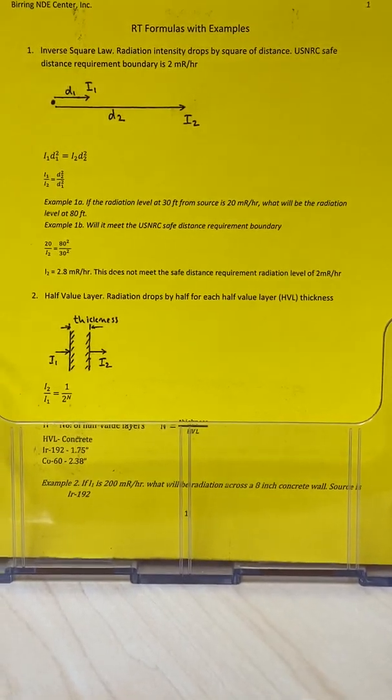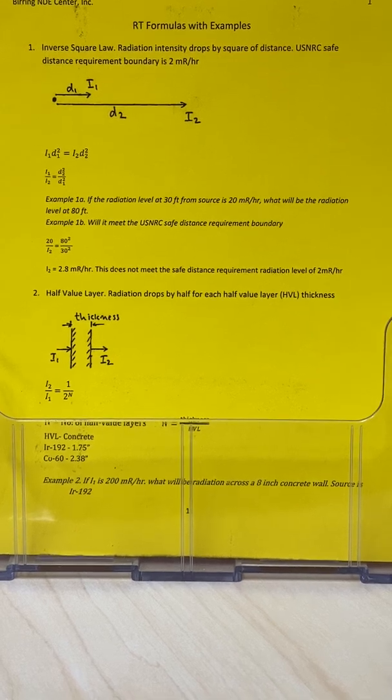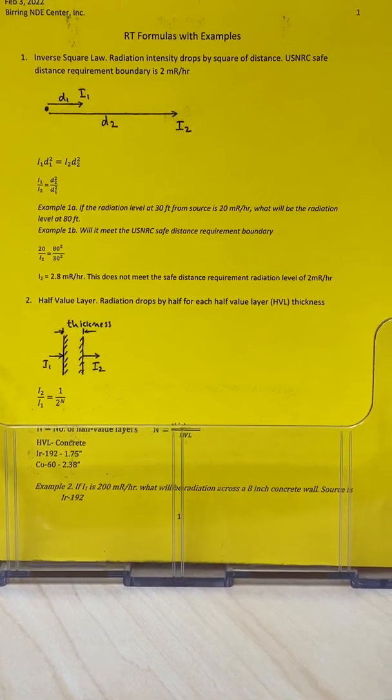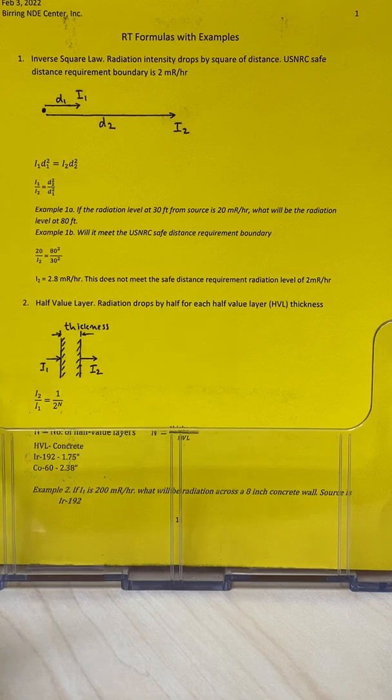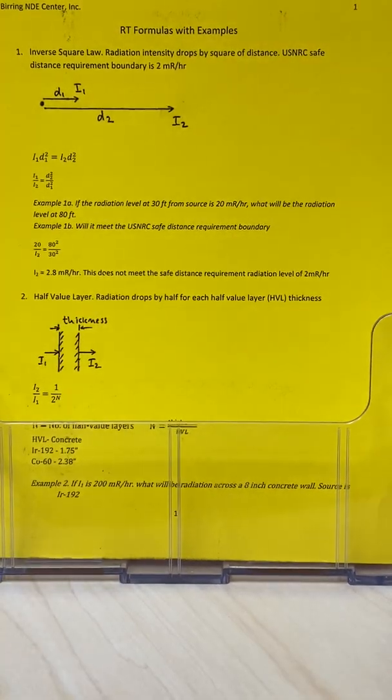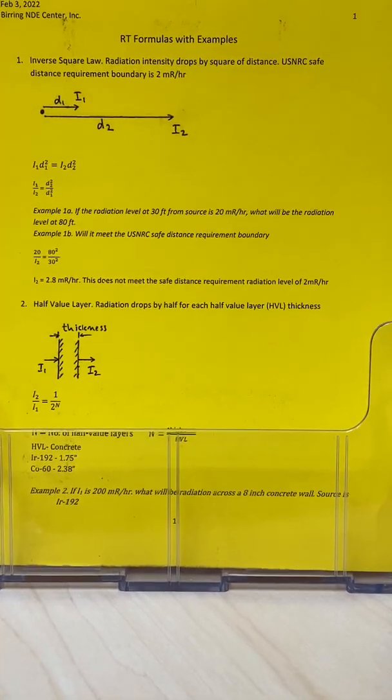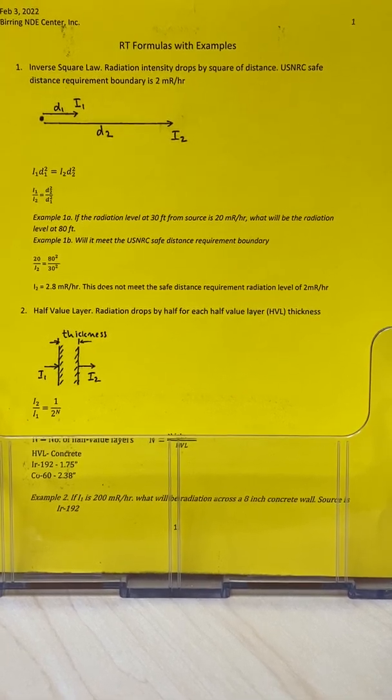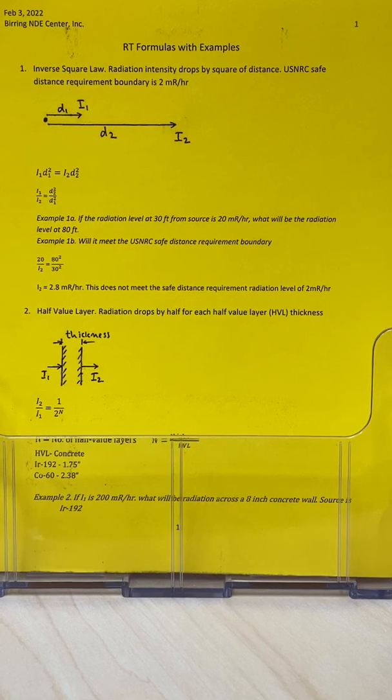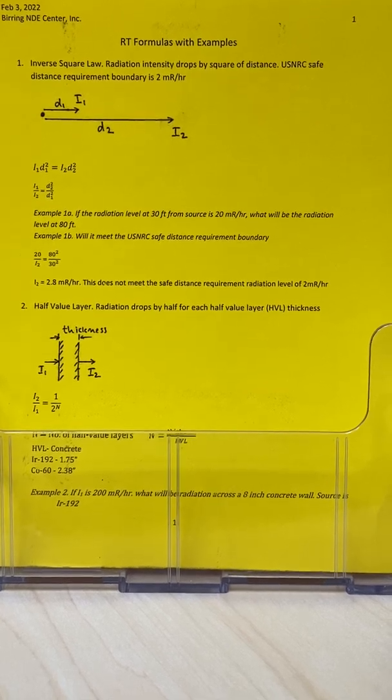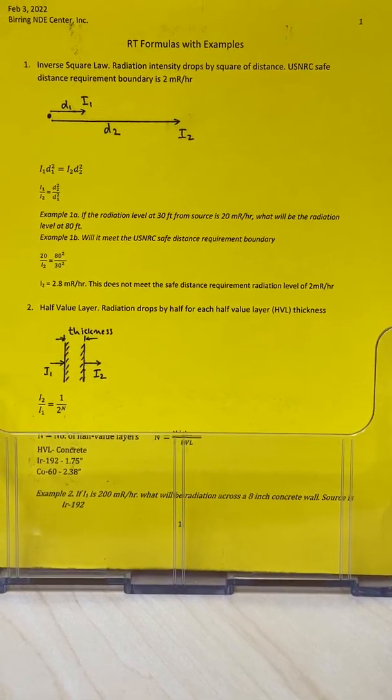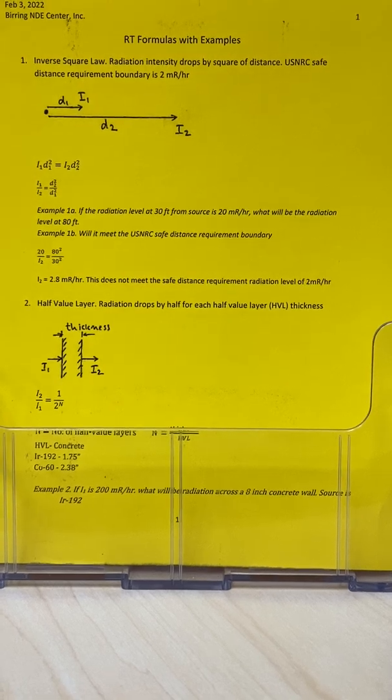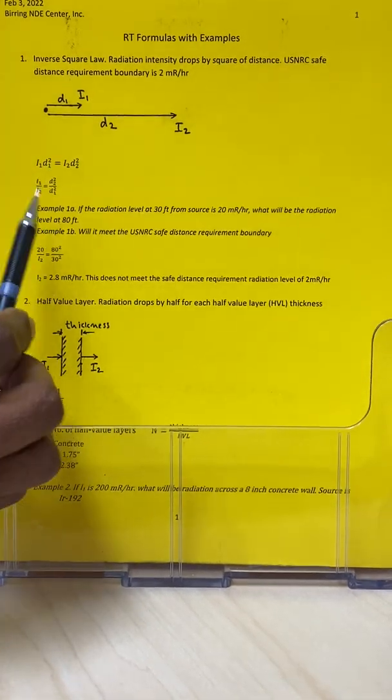the inverse square law. The easiest way to explain this is that if you have radiation I1 at a distance d1, then what happens if you double the distance or make it three times? The radiation drops by the square of the distance. So if you double the distance, the radiation becomes one-fourth. If you triple the distance, the radiation becomes one-ninth. Here is the formula to calculate that.